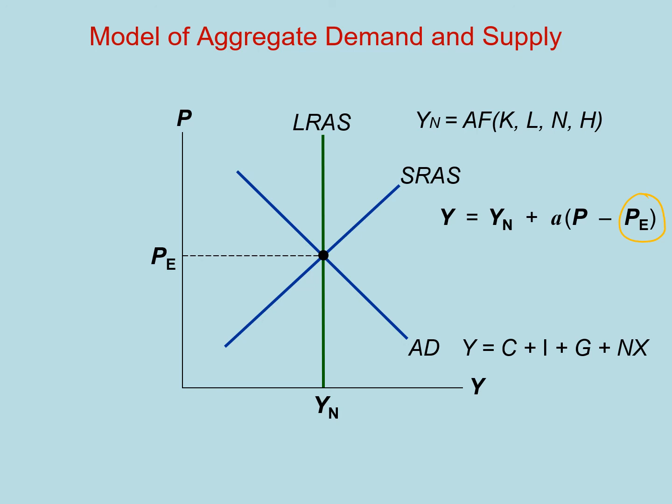Over time, they and the long-run aggregate supply together determine the long-term path of output. In the next videos, we will highlight each component in the model in detail and explain how to use it to analyze macroeconomic events.